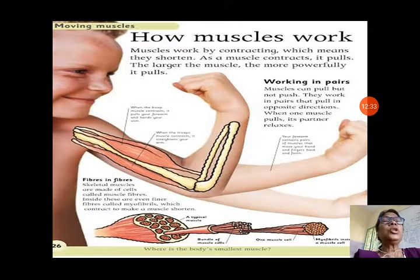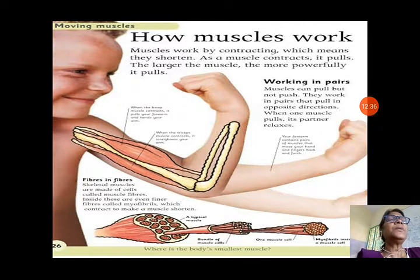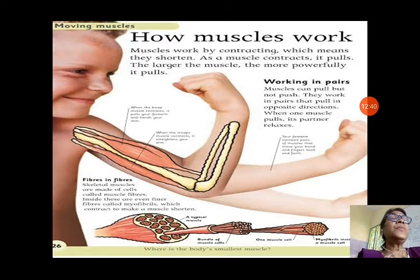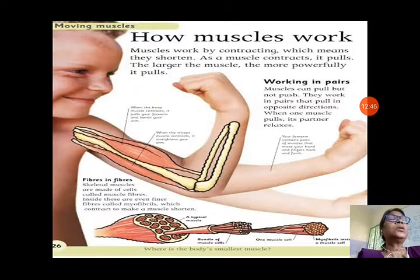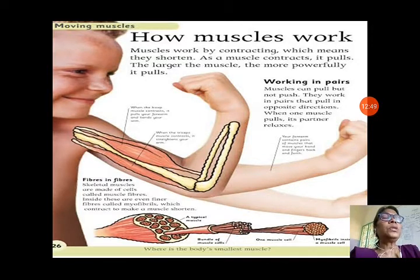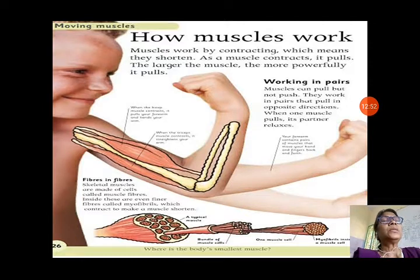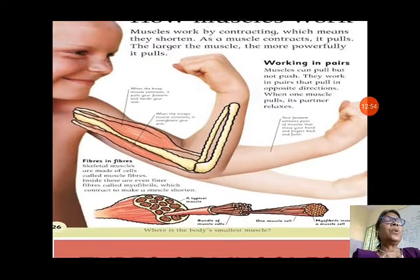You can see in this picture how muscles work in pairs. Muscles can pull but not push — they work in pairs that pull in opposite directions. When one muscle pulls, its partner relaxes. If one is contracting, the partner is relaxing. In this way, muscles help us in movement.